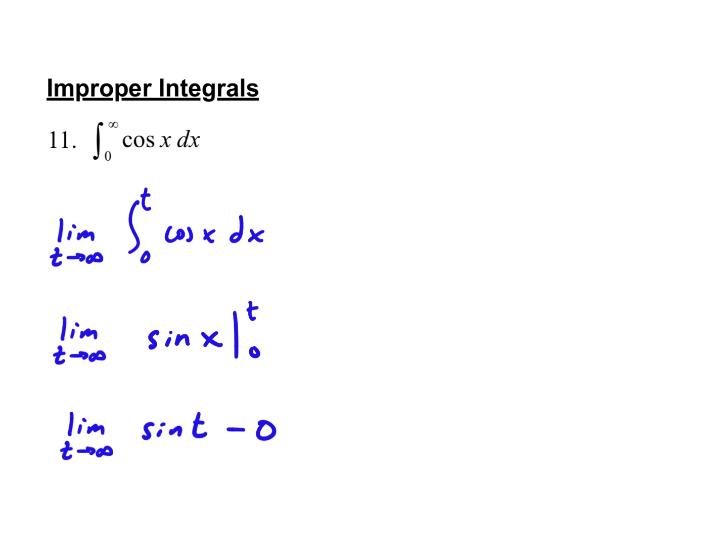It oscillates — right, it oscillates between negative 1 and 1, just keeps bouncing back and forth. So we can't really find the limit of this. For an improper integral, what we say is that this diverges. It diverges meaning it never approaches a specific value; converges means it sort of funnels down to a number.